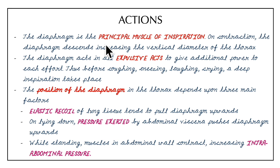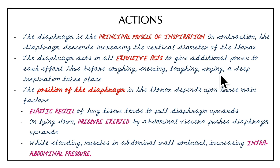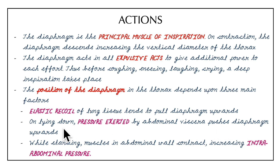The diaphragm is the principal muscle of inspiration. On contraction, the diaphragm descends, increasing the vertical diameter of the thorax. It acts in all expulsive acts — before coughing, sneezing, laughing, and crying — a deep inspiration takes place. The position of the diaphragm depends on three main factors: the elastic recoil of lung tissue pulling it upward; when lying down, the abdominal viscera push it upward; and when standing, the abdominal wall muscles contract, increasing intra-abdominal pressure.